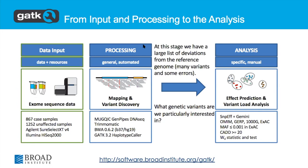It's a slightly older pipeline, but it's very representative of pipeline implementations we see out in the wild, and perfectly reasonable to do. They followed the main GATK recommendations for variant calling, and then having produced a variant call set, you get to the real analysis. In this case they were doing two steps: effect prediction, and then the variant load analysis.